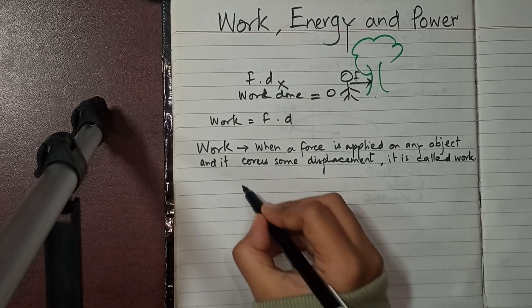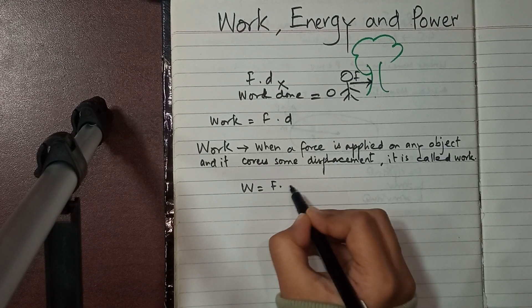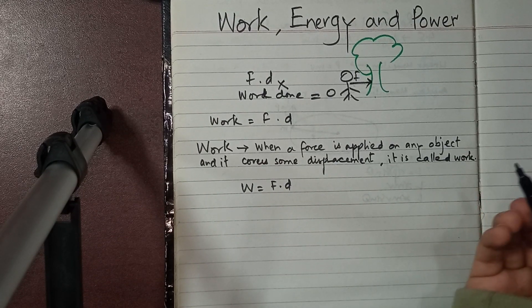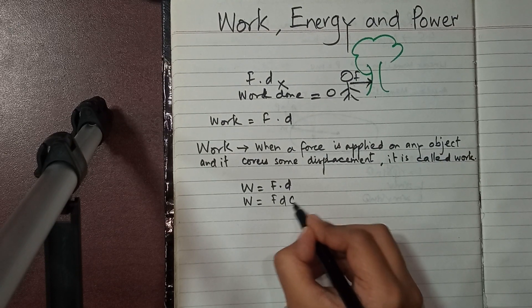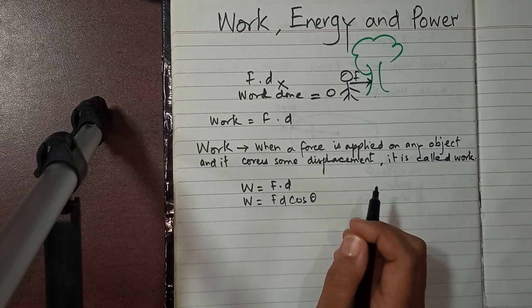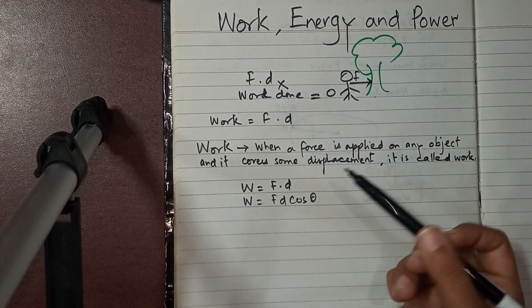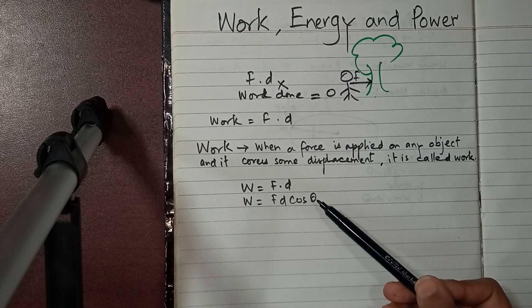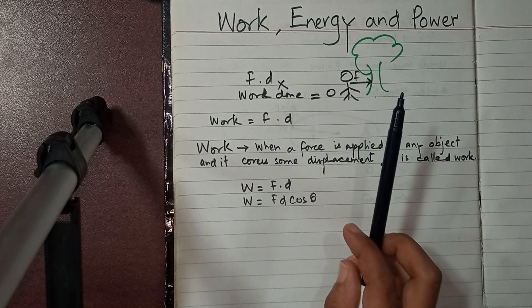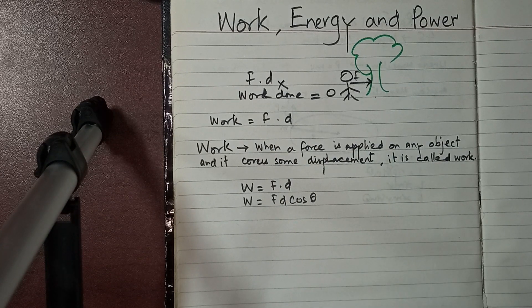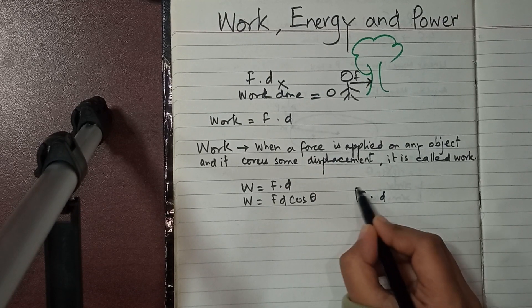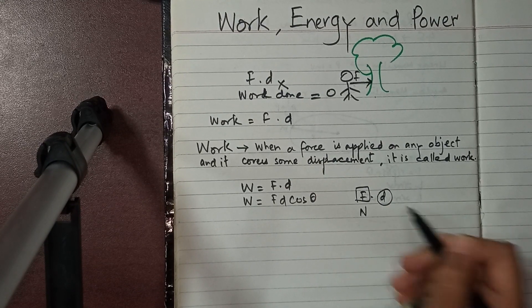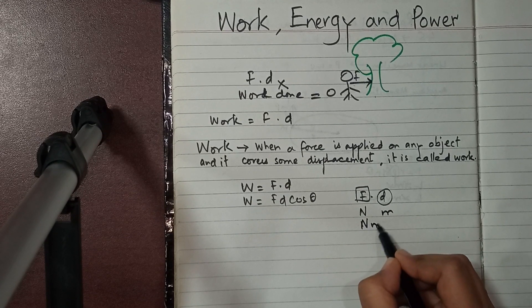Work equals force into displacement. Since work is a scalar quantity, the formula is W = Fd cosθ, where θ is the angle between force and displacement. Work is a scalar quantity.